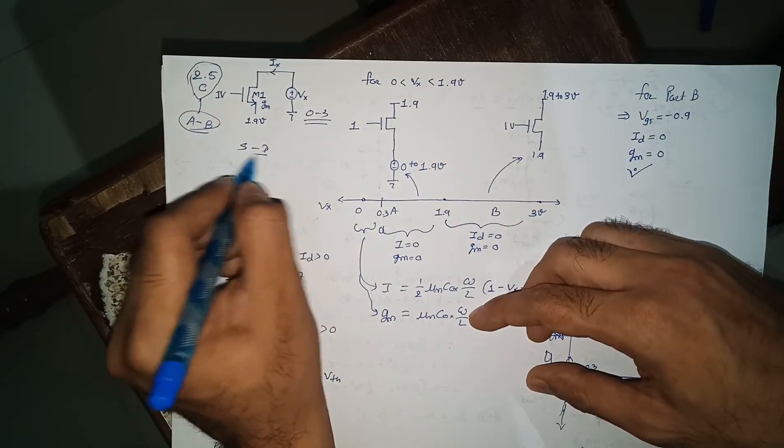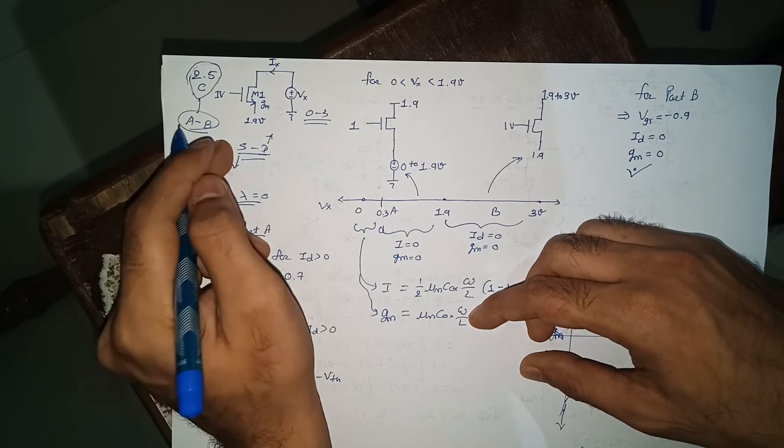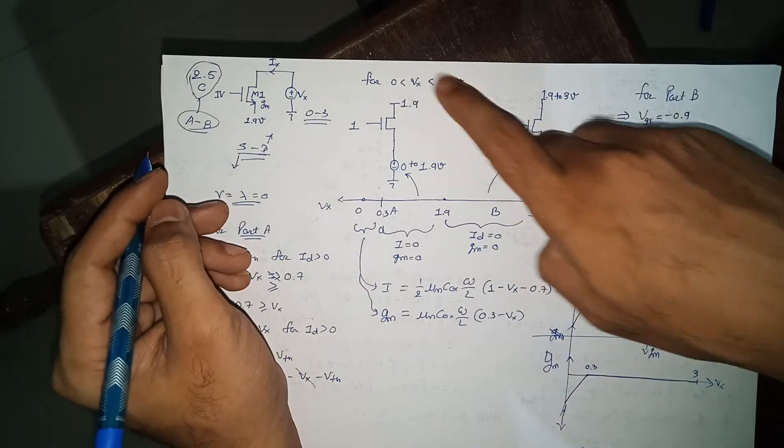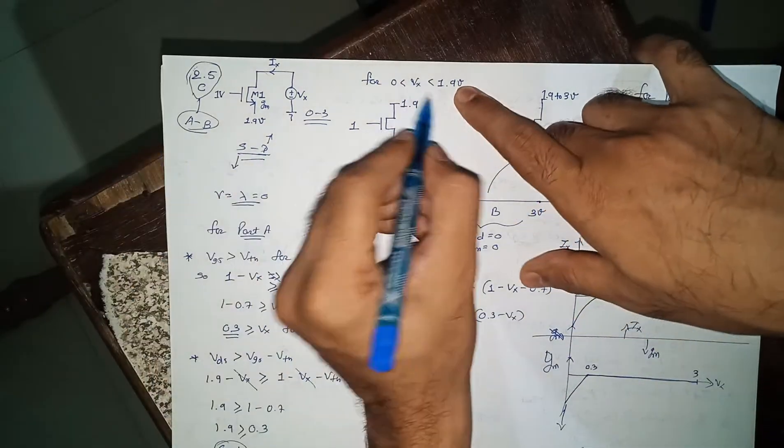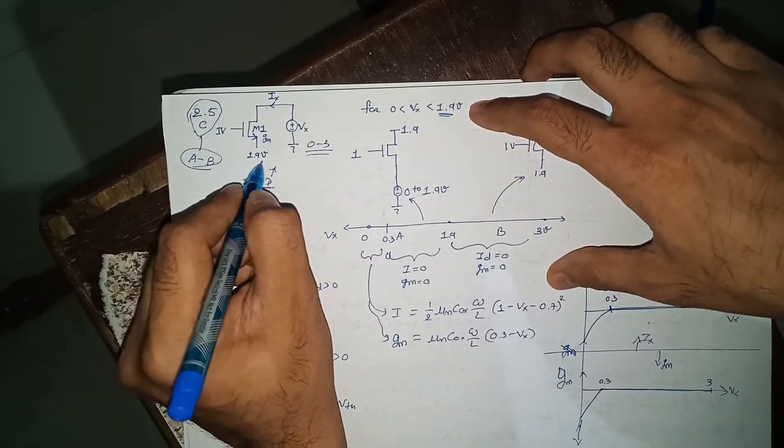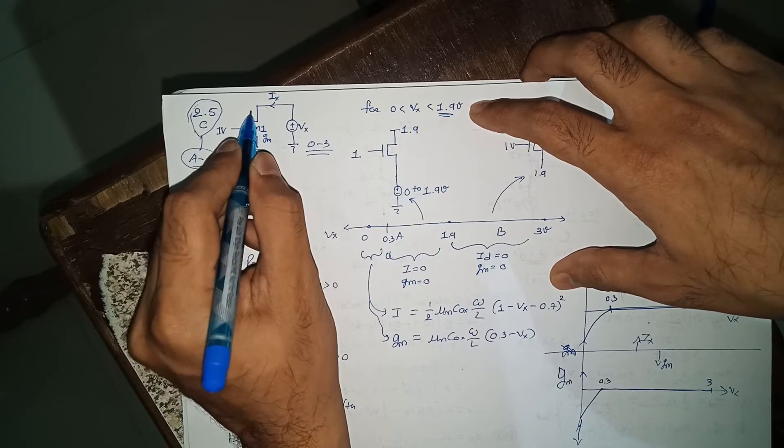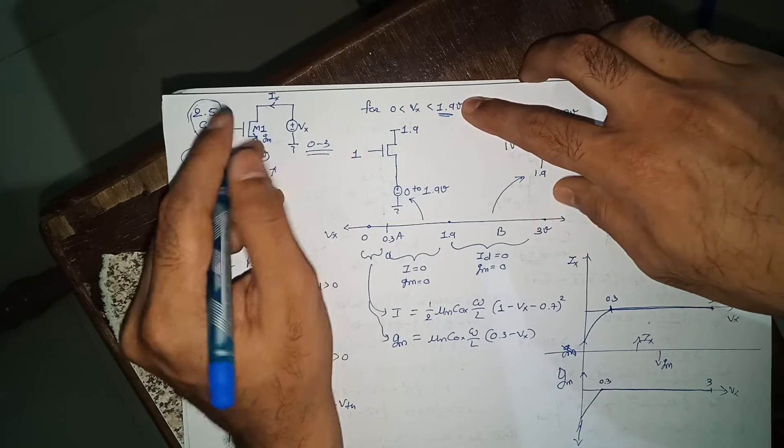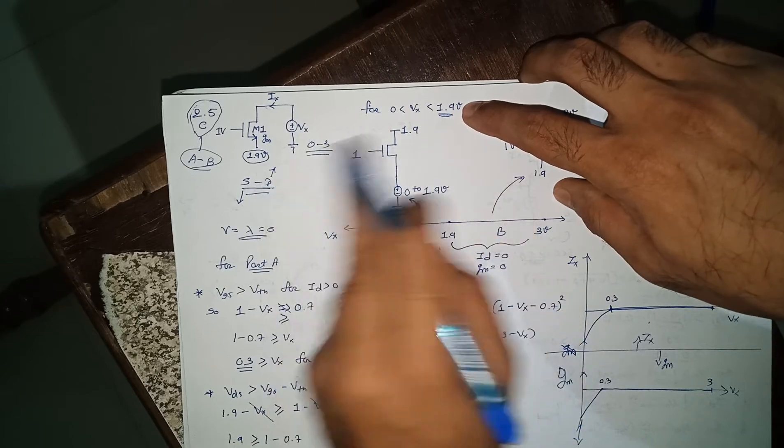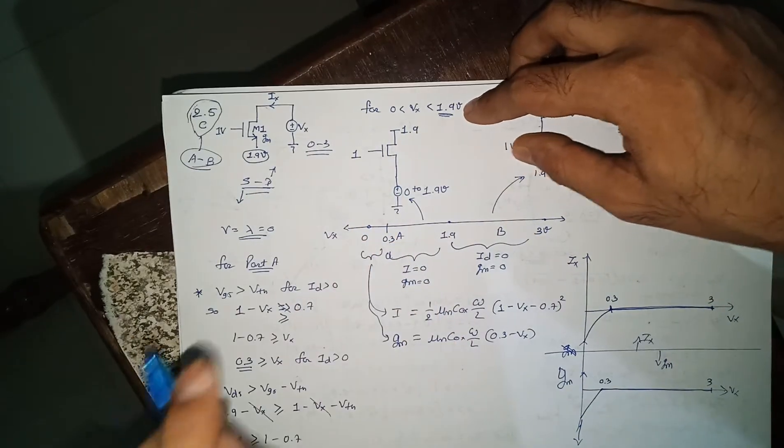Source and drain are interchangeable. Whoever is having higher potential will be drain, lower potential will be source. From 0 to 1.9, how to decide this value? Basically in part b, whatever your fixed voltage at any terminal, for other terminal that voltage will be your separation point. For here it will be 1.9. For part b it was 1 volt.